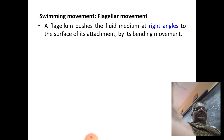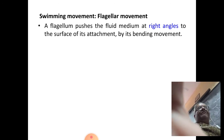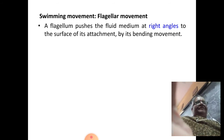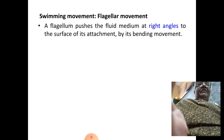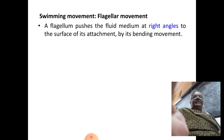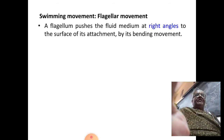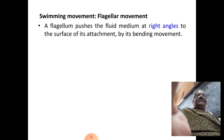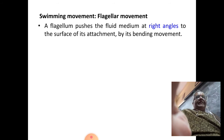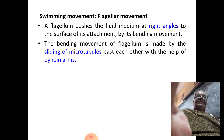Now let us study the swimming movement, or flagellar movement. A flagellum — please remember the picture of Chlamydomonas or Euglena — pushes the fluid medium, that is the surrounding water, at right angles to the surface of its attachment. So the water is moved at 90 degrees to the attachment of the flagellum, and the movement happens by bending.